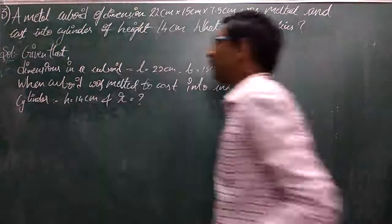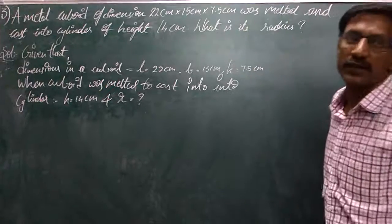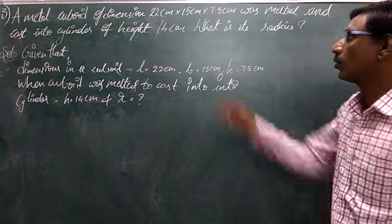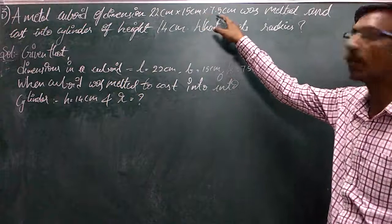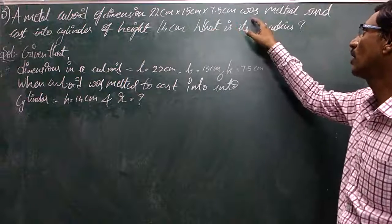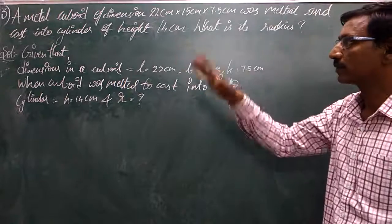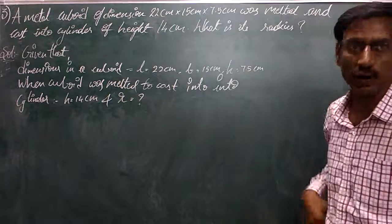A metal cuboid of dimensions 22 cm x 15 cm x 7.5 cm was melted. The outer volume comes from this cuboid.